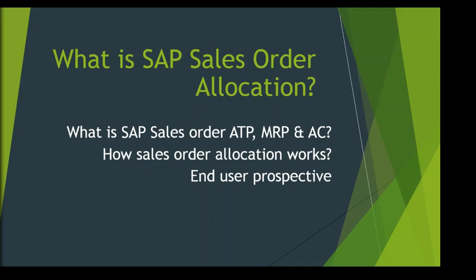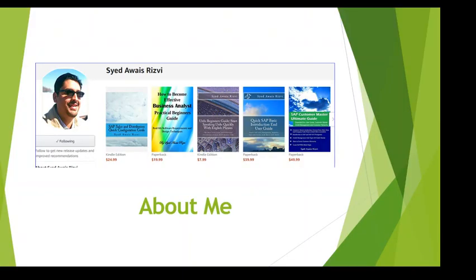This video is about what is SAP order allocation and related topics. Before we understand the basics — what is allocation, how MRP works, how availability check works, and how sales order allocation works — we'll cover this from the perspective of the end user, but also from other perspectives. A little bit about me: my name is Saga. I've been working in SAP for quite some time, have written SAP books and end user books as an SAP consultant and business analyst. My profile link is available in the YouTube description.